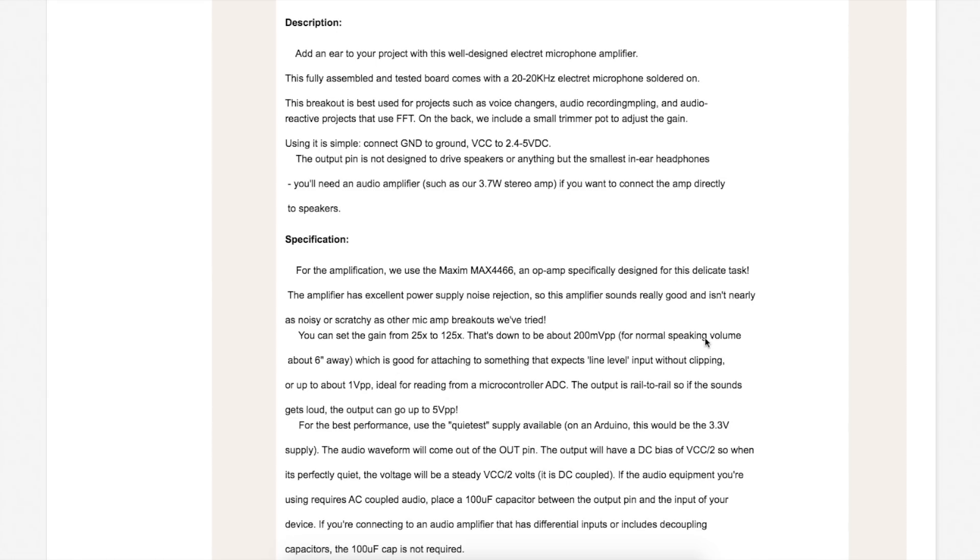There's a reference here that normal speaking volume about 6 inches away can do 200 mV peak to peak and that might work well for a line level input. If you want to use an analog to digital converter, you might want more headroom than 200 mV, so you turn the gain up and get higher voltages.